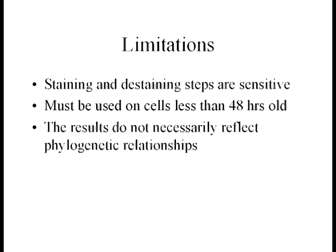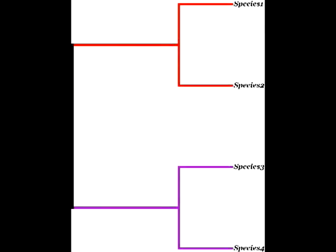And a final limitation is that the results do not necessarily reflect the phylogenetic relationship. A phylogenetic relationship simply means how close or related two species are. You can see in this tree, showing the relationships that species 1 and 2, which are gram-negative bacteria, are closer related, while species 3 and 4, which are gram-positive, are closer related.